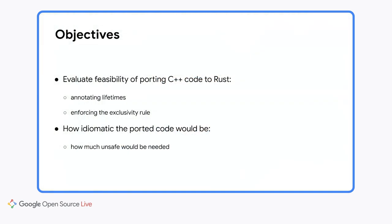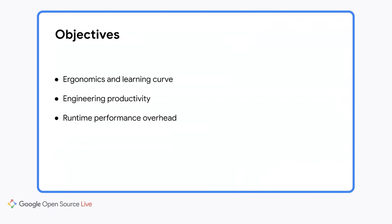The main objectives were to evaluate the feasibility of porting C++ code to Rust, in particular annotating it with lifetimes and enforcing the exclusivity rule to see how idiomatic the ported code would be, especially how much safe code would be needed. We also wanted to investigate the ergonomics and the learning curve, the engineering productivity, and measure the runtime performance overhead of using Rust.